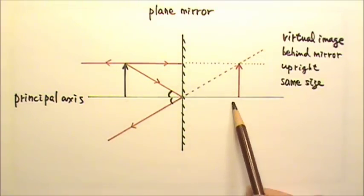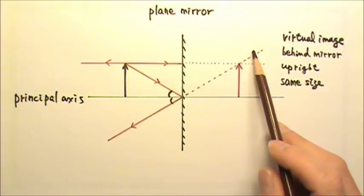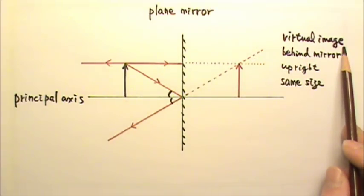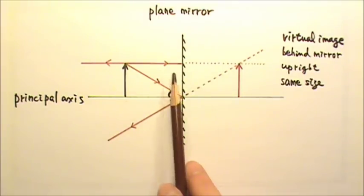Because this image is formed by light ray extensions, not real light rays, this is called a virtual image. This image is formed behind the mirror.